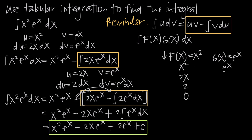For g(x), we take successive integrals of e to the x. The integral of e to the x is e to the x, and this stays e to the x each time we integrate. So we continue writing e to the x all the way down until we reach the last row corresponding to the 0 value in the f(x) column.